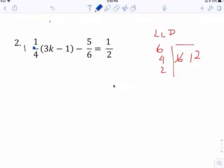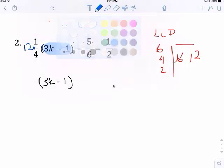So multiply by 12. This is protected right here. So we're just going to bring it down. 1, 3k minus 1, that's protected. Times this by 12. Additive inverse. And times this by 12. Make sure you multiply all of them.